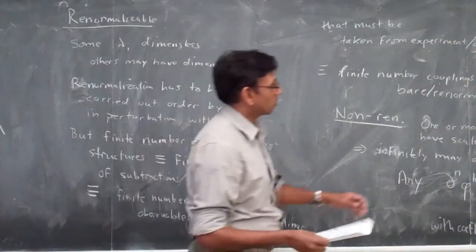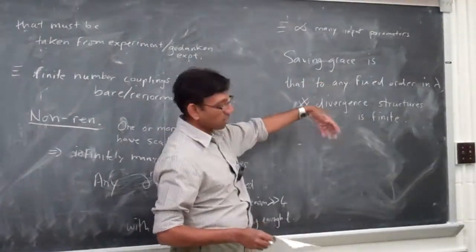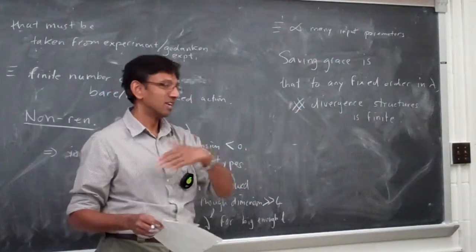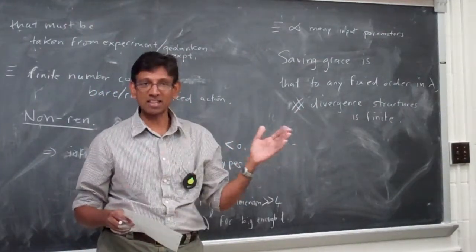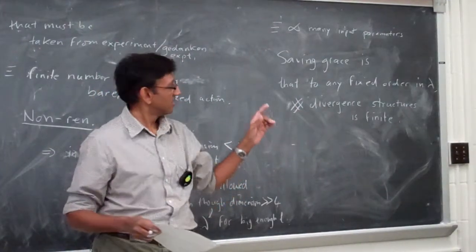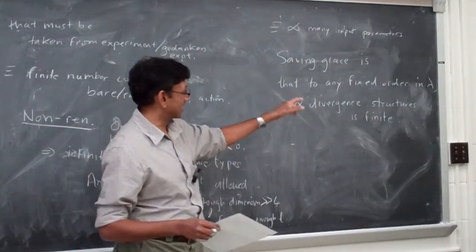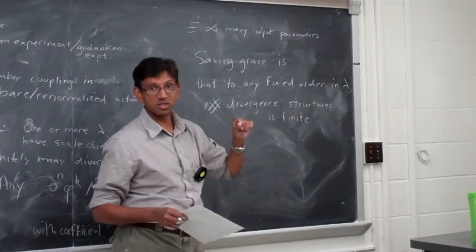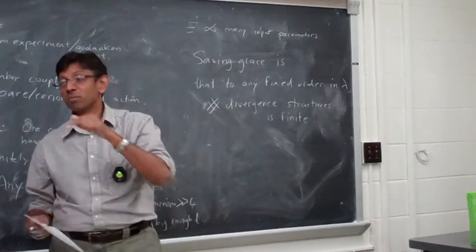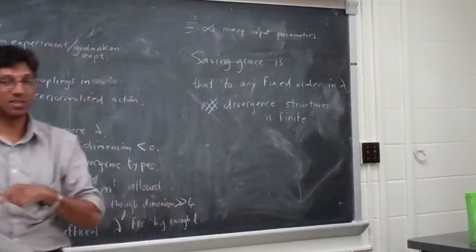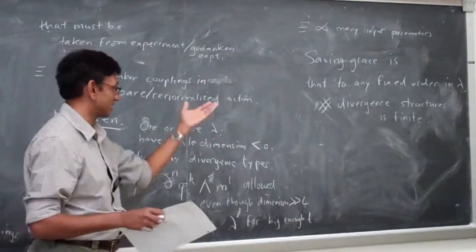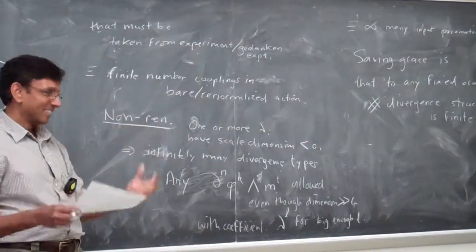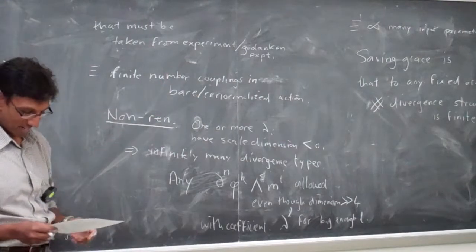So you can work order by order; it's just that the job gets harder and harder — and forget the job of the theorist, the job of the experimentalist gets harder, as they have to make more measurements before you as a theorist are willing to predict one thing. That's the real solid sense in which this makes a difference.